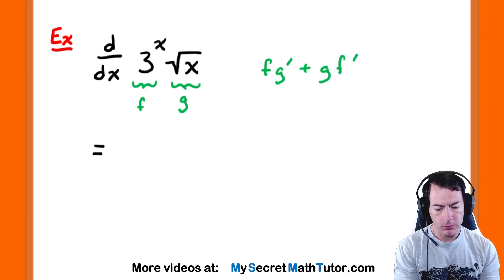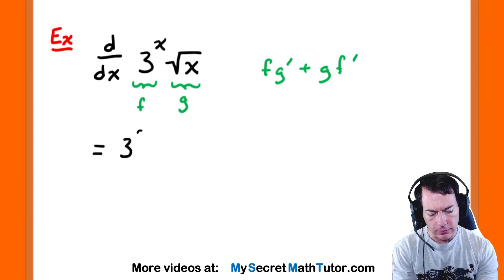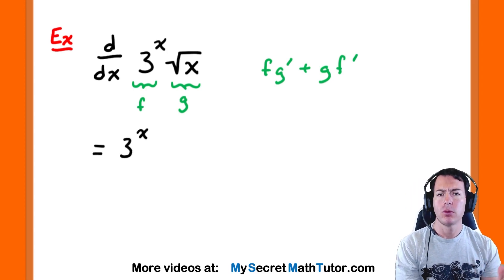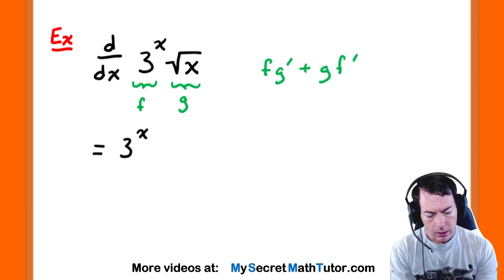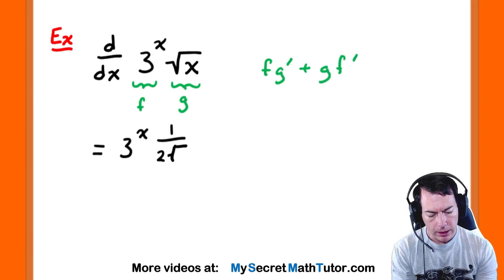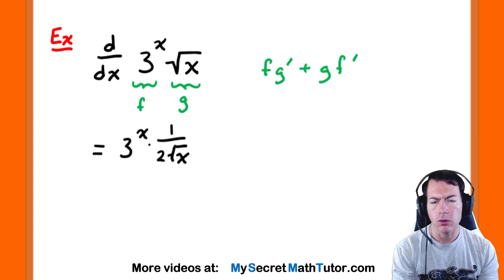All right. Starting off with the first part. So we'll have the function just as it is, which of course is 3 to the power of our x. Now we'll multiply by the derivative of g. Since it's a square root, this will be 1 divided by 2. And we have the square root of x. All right. So those are being multiplied together.